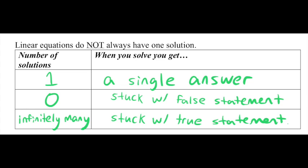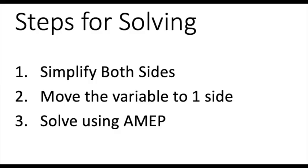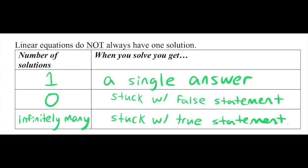it's important to understand that there's nothing special in the solving process for a no solution or infinitely many solution problem. All you do is you try to solve the problem using our normal three-step process, and you end up getting stuck before you make it to step three. Once you get stuck, you decide whether or not you're stuck with a true or a false statement, and that will determine whether or not you have infinitely many or no solutions.